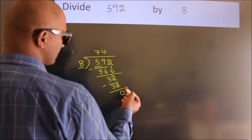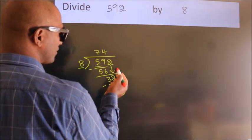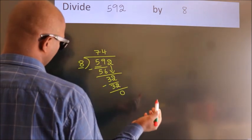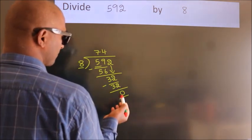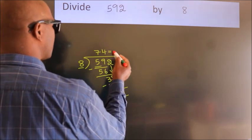After this, there are no more numbers to bring down, and we got remainder 0. So this is our quotient.